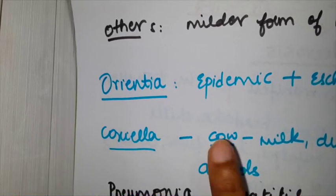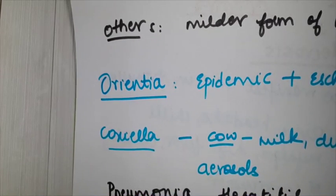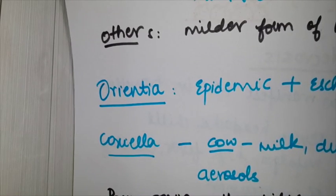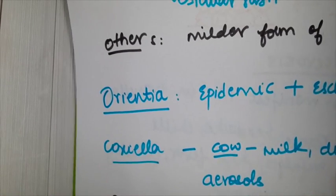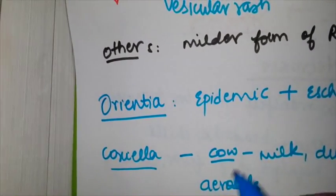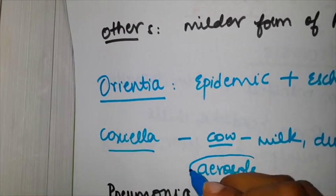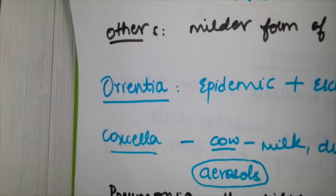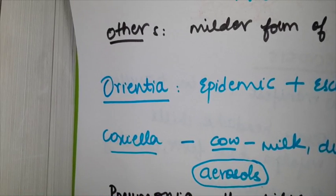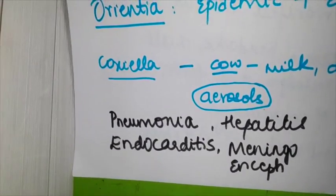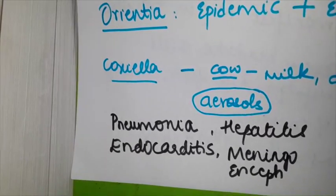Last group is Coxiella. Coxiella is very different—you need to pay attention here. Coxiella—remember cow. Cox-cow, so it's basically involved with dealing with milk, animals, dust, and soil. All you have to remember: it's infective through milk, dust, and soil. Because dust portion is involved, you should remember this is spread through aerosol.